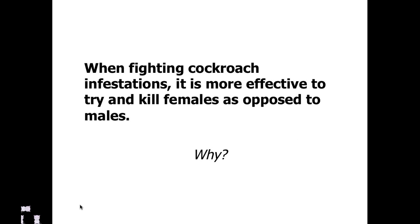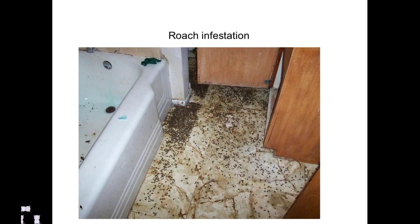In terms of fighting infestations, which ones do we kill? Do we try to kill the females or the males? This is a lovely roach infestation. Generally it's considered optimal to go after the females, because regardless of how many males there are in a population — as long as the species is not hermaphroditic, meaning they can't switch sexes — getting rid of the females means you cannot have a next generation. So many times the target of pesticides is to attack the females.